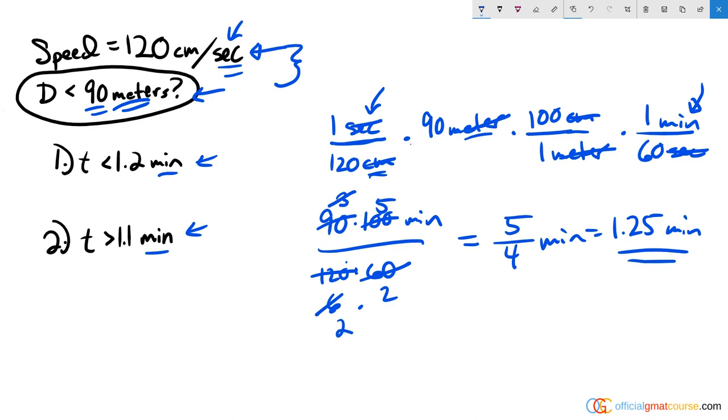So if I know that I drove for longer, I know that I would have gone further than 90 meters. And if I know I drove for less time, then I know I would definitely not cover 90 meters, I would cover less distance. Well, statement one tells me I covered less distance because I drove for less time. For sure I drove for less than 1.25. So this is sufficient.